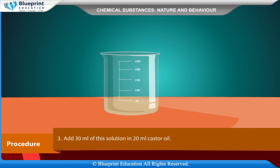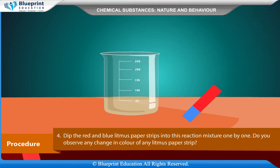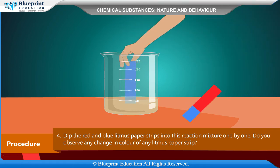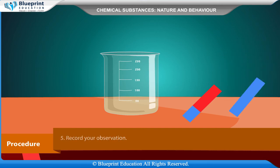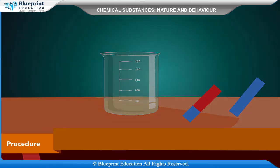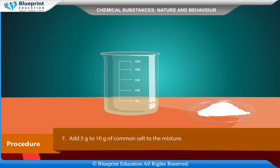Prepare about 50 ml of 20% solution of sodium hydroxide in distilled water. Add 30 ml of this solution to 20 ml of castor oil. Dip the red and blue litmus paper strips into the reaction mixture one by one. Observe any change in color. Record your observation. Now touch the beaker from outside — is it hot or cold?